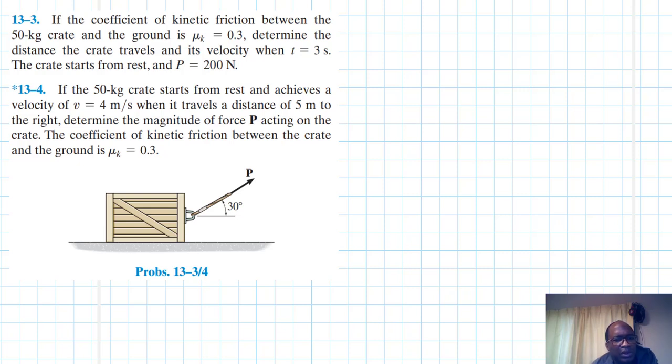The crate starts from rest and P is equal to 200 Newtons. We're just going to solve the first problem and solve the next one in the next video. Both problems are coming from Engineering Mechanics and Dynamics, 14th edition by RSC Hibbeler.